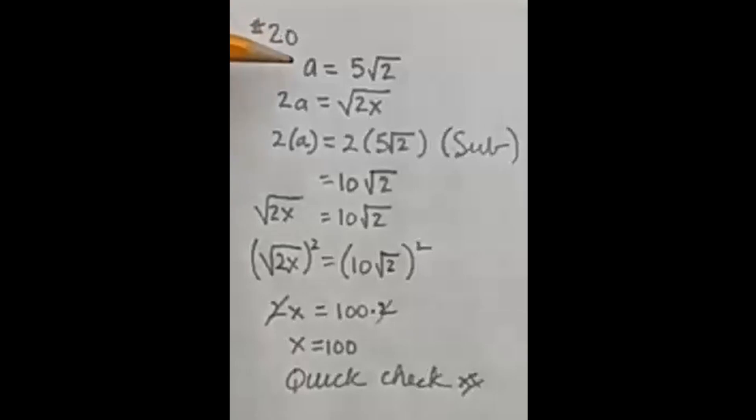So we're given a equals 5 square root of 2 and 2a equals the square root of 2x. For this problem, I note the relationship between a and 2a. We can see that 2a is just double a. So my plan is to multiply a by 2 and set them equal by the substitution rule.